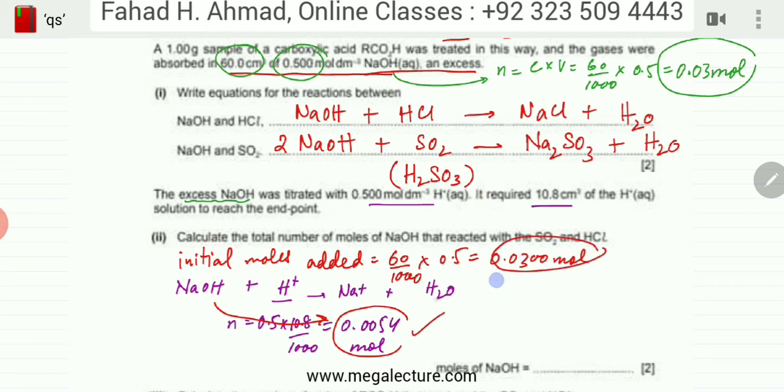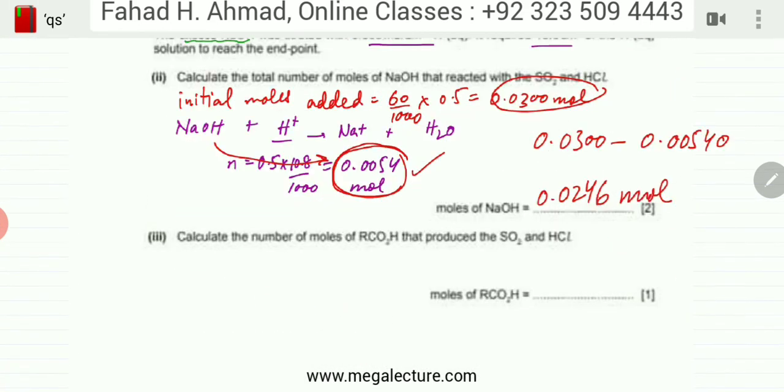These are the initial moles that I added and these are the leftover excess moles used in titration at the end. What were the moles that actually reacted? Initially you added 0.03 moles, and I'm going to subtract the leftover moles, so the moles remaining at the end are 0.00540 moles. The answer is 0.0246 moles - these are the moles that have actually reacted.